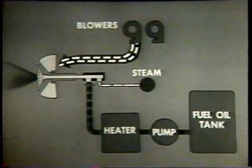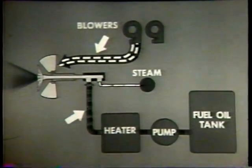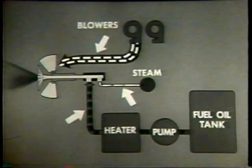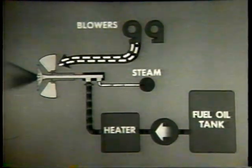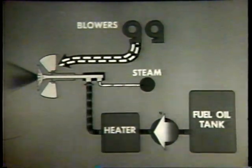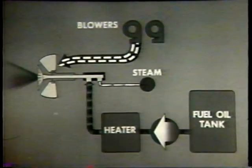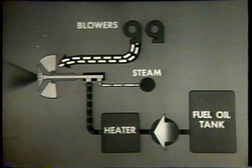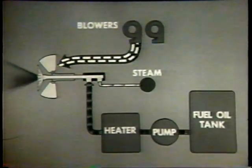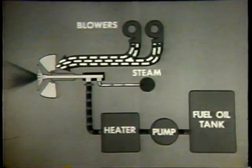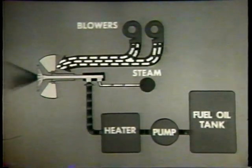Control of the burner involves regulating the air, oil, and steam supply. Regulate oil pressure to regulate the quantity of oil. When you increase or decrease oil pressure, you must change the steam pressure correspondingly to get good atomization. You must also change the sprayer plate in the burner if the capacity of the plate is incorrect for the new firing rate. As with most burners, you adjust the speed of the blowers and the number in service to control the air supply.